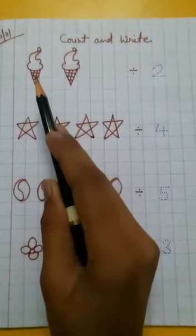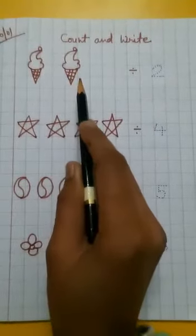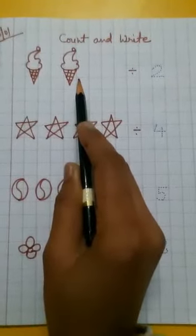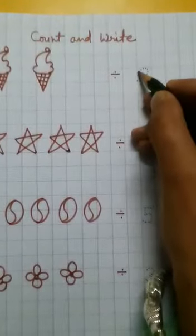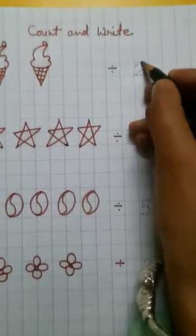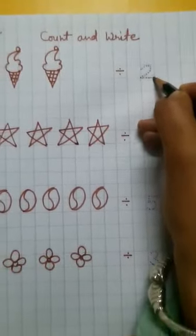First one is how many ice creams? One, two. Two ice creams. So we have to write here number two like this.